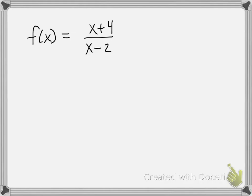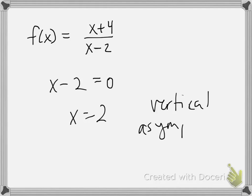So here with this function we have f(x) equals x plus 4 divided by x minus 2. And I told you that to find vertical asymptotes, we take our denominator, x minus 2, set it equal to 0, and solve for x. And so this graph has a vertical asymptote at x equals 2.